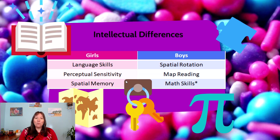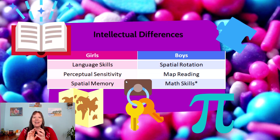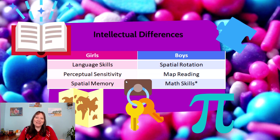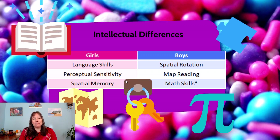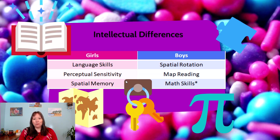Boys have other spatial skills they tend to perform better at. One is spatial rotation — being able to visualize how a Lego block, pipe, or puzzle piece rotates and connects in the mind, which is useful for things like solving a Rubik's cube. Boys also tend to outperform girls on average in map reading skills. The stereotype that men never ask for directions actually has some basis: boys and men tend to be a little faster at orienting themselves and finding their location on a map. Again, these are averages, and there are plenty of individual differences.